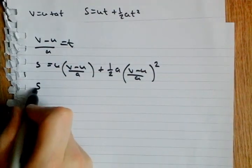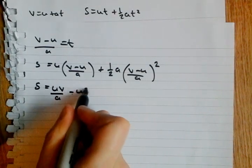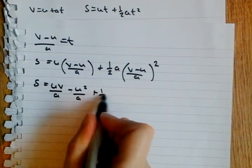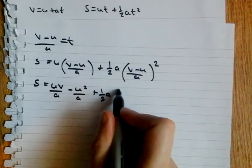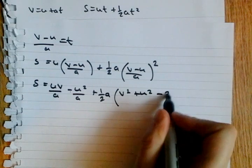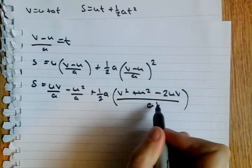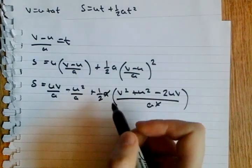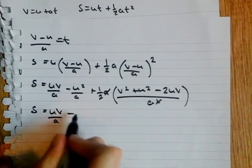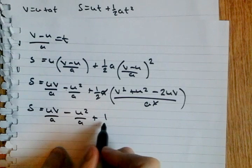Expand the brackets here. UV over A minus U² over A. Times out this bracket here, plus half A times V² plus U² minus 2UV over A². One of these A squareds cancels out with this A. Awesome. That's what we like, cancelling out. Just rewrite this part again and expand this part.